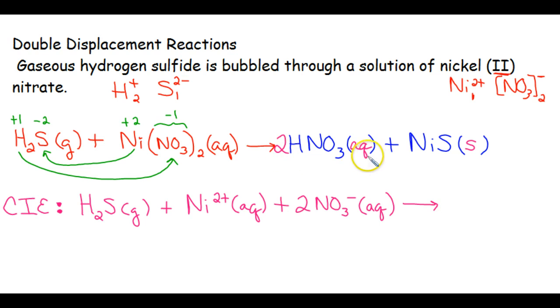We've hit our first product, which is aqueous, so it's going to be written as separate ions. There are two hydrogen ions. Make sure you put that charge. And there are also two nitrate ions. Make sure you put the charge. And then our second product is solid. Since it is not aqueous, we do not break it apart. So this is our complete ionic equation.